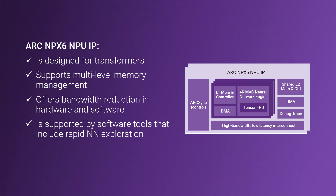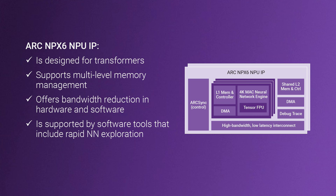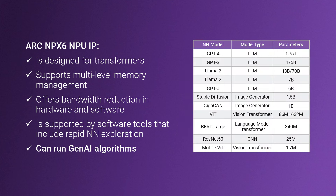But you might be asking: wasn't there an "if" to consider? The NPX6 can run Generative AI models if you select a model with a reasonable number of parameters. GPT-4 with 1.75 trillion parameters will not be a practical choice for any embedded use case. However, models under 10 billion parameters — such as LLaMA 2, the 7 billion version, and Stable Diffusion — are within reach of an embedded NPU.